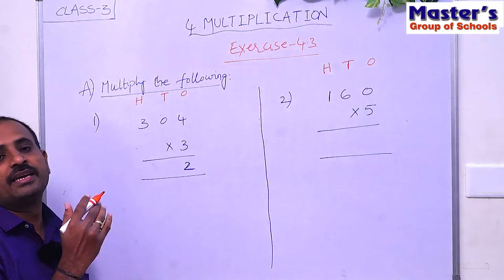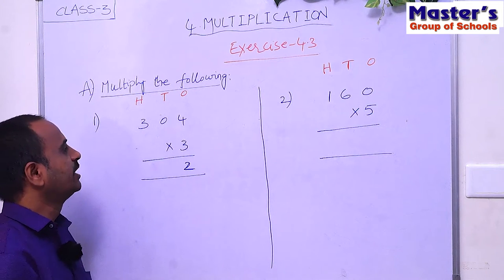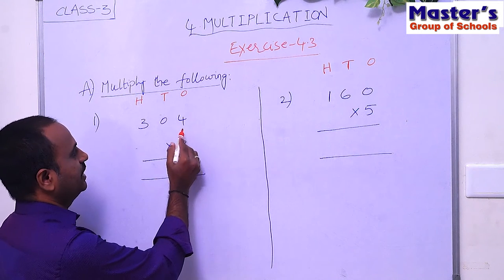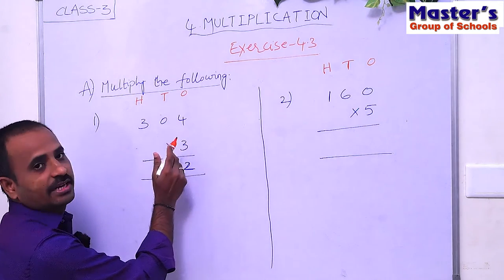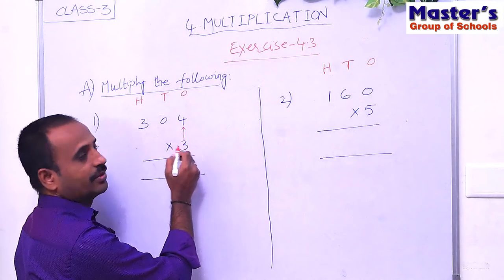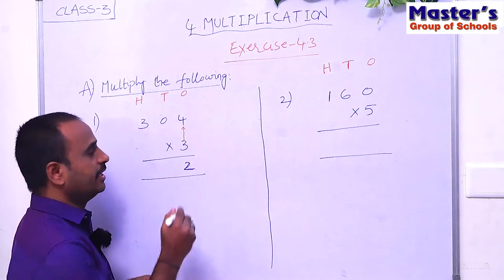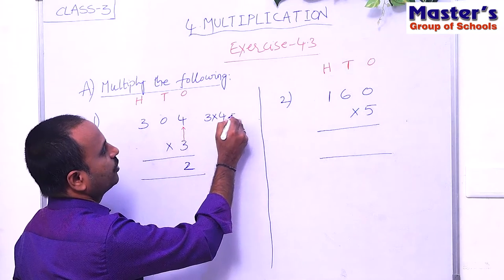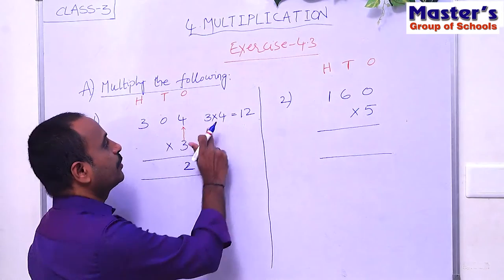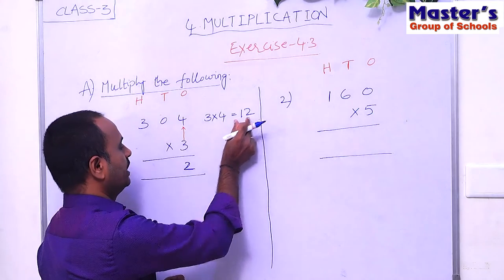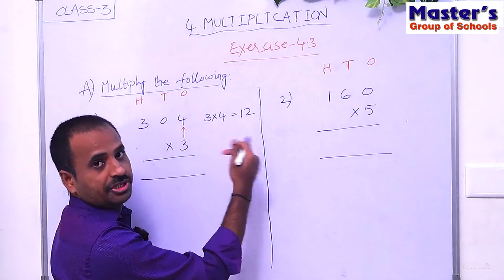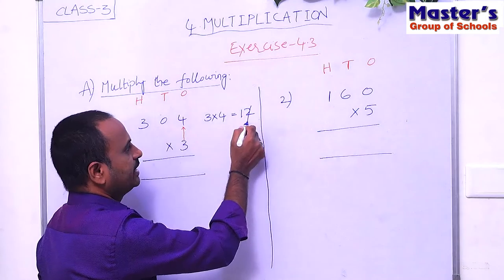In multiplication, just like addition and subtraction, we start from ones place. Multiply the digit in ones place with 3: 4 is in ones place, so multiply 4 with 3 — that is 3 × 4. Children, 3 fours are 12, and 12 is a two-digit number. If the product is a two-digit number, we should not write the whole number under ones place. Write only the second digit under ones place.